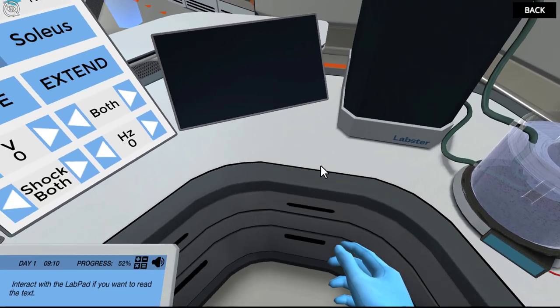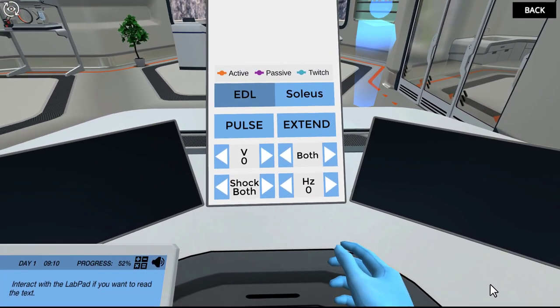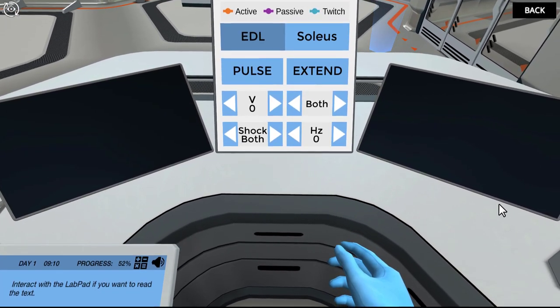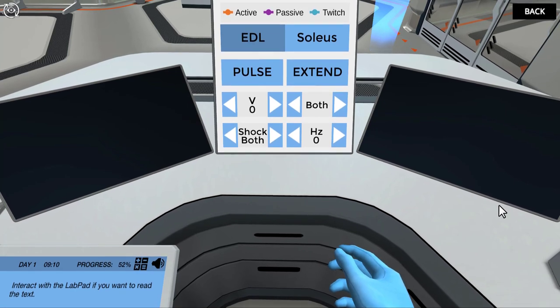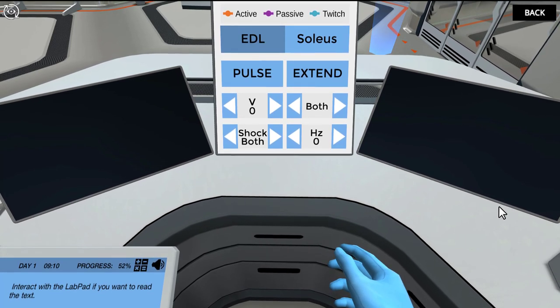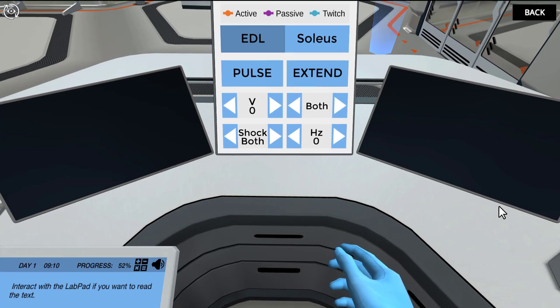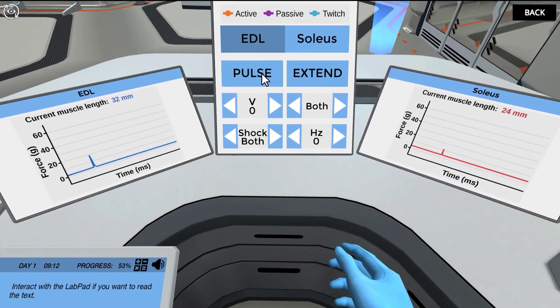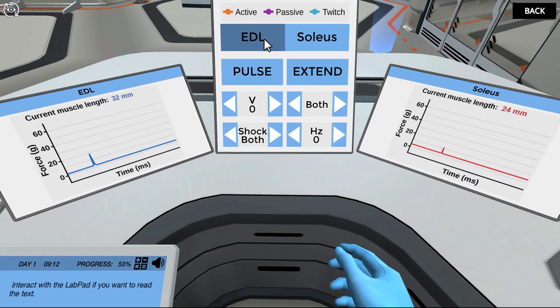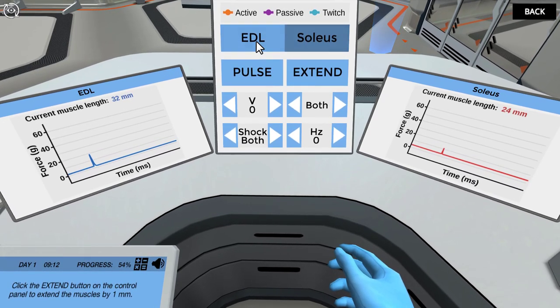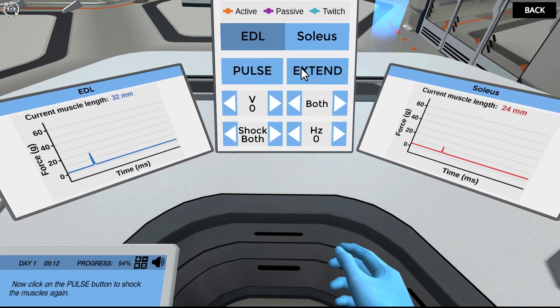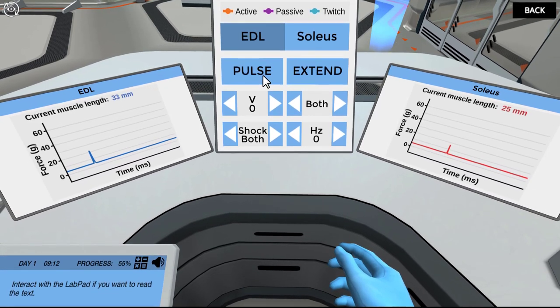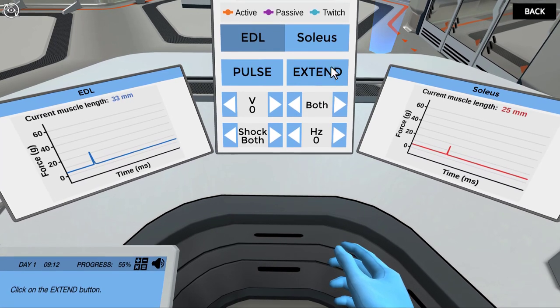On the middle screen, you will find the interface for both force transducers. The data will then be logged on the two peripheral screens. When you stimulate the muscles, the twitches will be recorded on the screen. Then you will stretch the muscle one millimeter and the twitches will be recorded again. You will repeat this until you see a decrease in force. This will help you find the optimal muscle length. Click on the pulse button to shock the muscles. You can click on the EDL and soleus buttons on the control panel to toggle between the data for each. Click the extend button on the control panel to extend the muscles by one millimeter. Now click on the pulse button to shock the muscles again. Seems like stretching the muscles allows for a bit more force to be exerted on them.